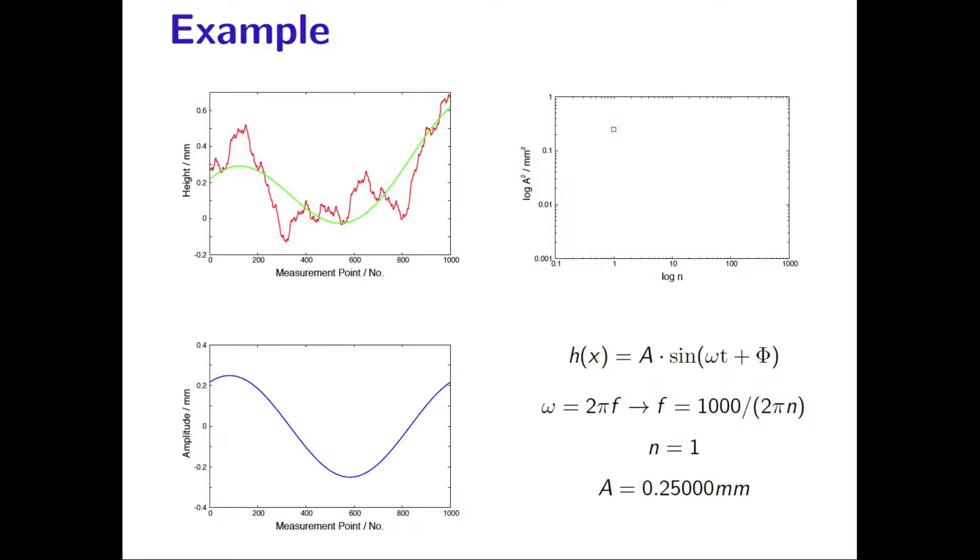So, let us add some more waves. This next wave is chosen so that n is 2 and the amplitude is about 0.14 mm. We see that the error between the green curve and the measured profile has become smaller compared to before. However, it is still necessary to include sinus waves with higher frequencies.